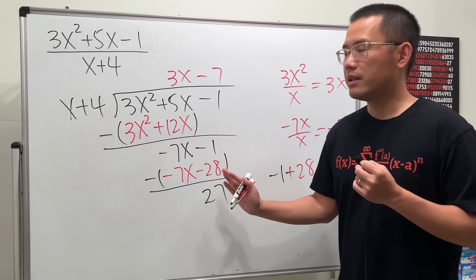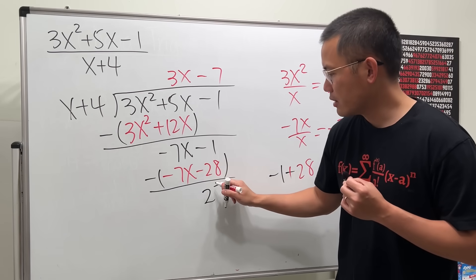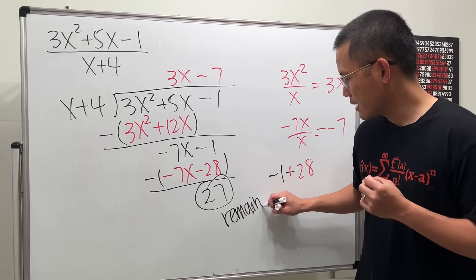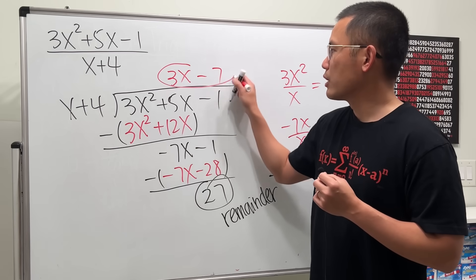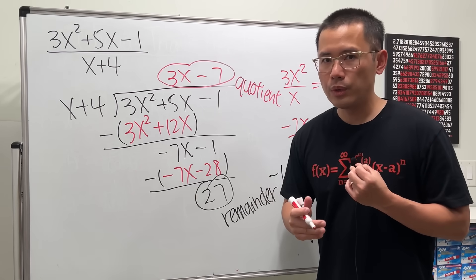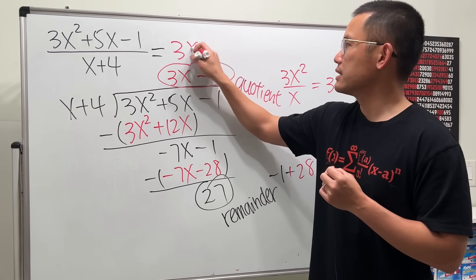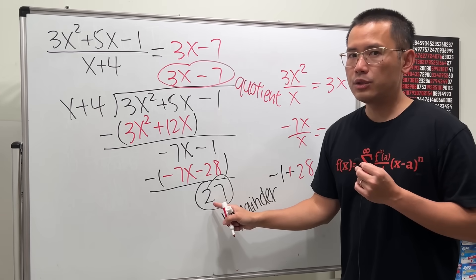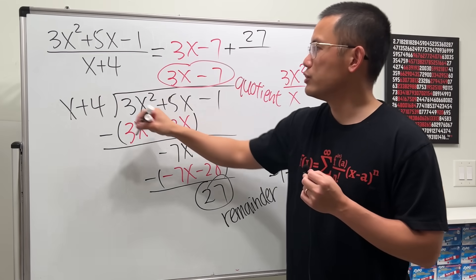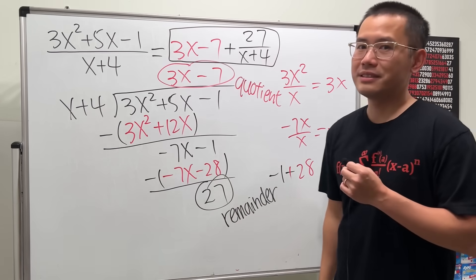We're done — 27 is the remainder. This is how we write the answer: write the quotient first, which is 3x minus 7, then add the remainder 27 over the original denominator x + 4. So the final answer is 3x - 7 + 27/(x + 4).